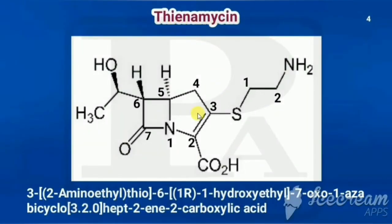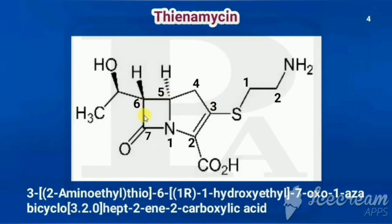The next drug is thienamycin. Its structure also has a fusion of two rings (totaling seven atoms), so it uses heptane as the base, but since there is a double bond, it is called heptene. The numbering starts from nitrogen: 1, 2, 3, 4, 5, 6, 7. The second position has carboxylic acid, the third position has a CH2-CH2-NH2 substituent, the sixth position has CH(OH)CH3, and the seventh position has a ketone.